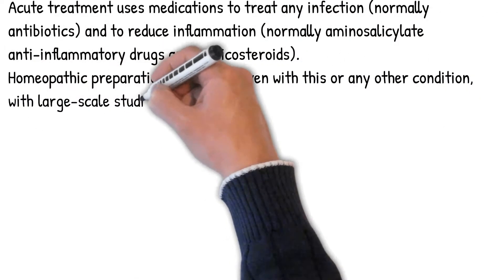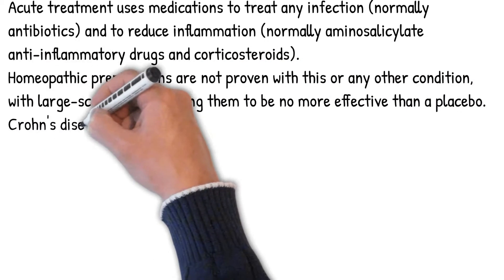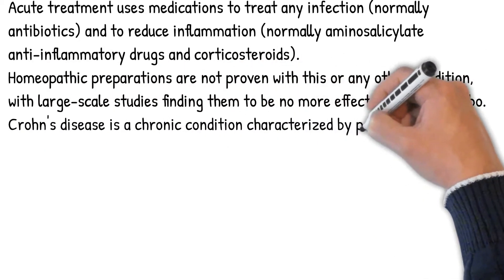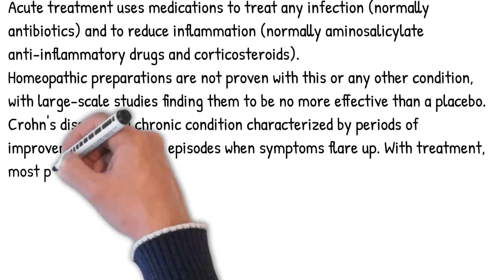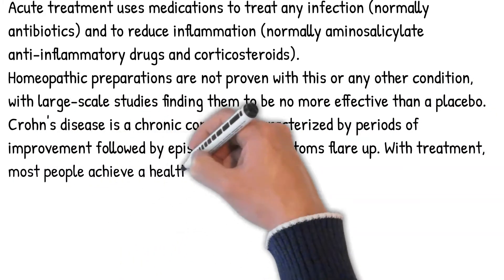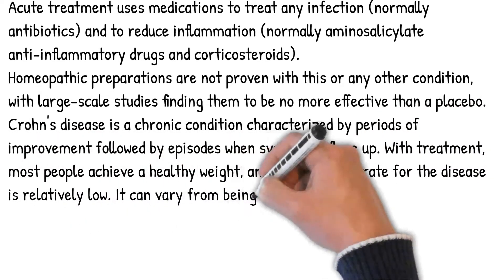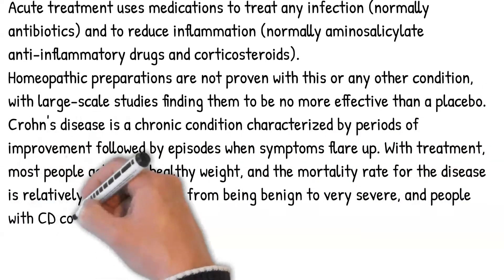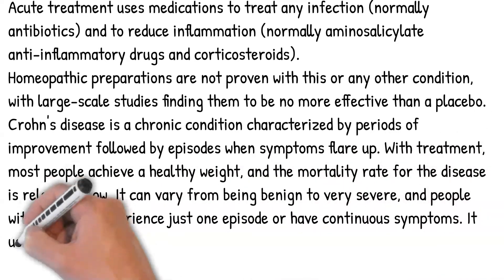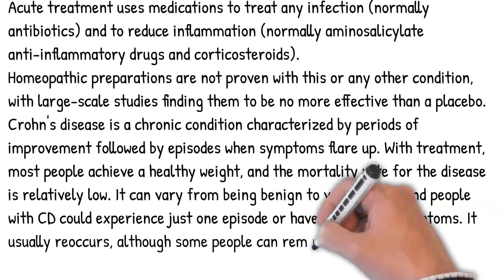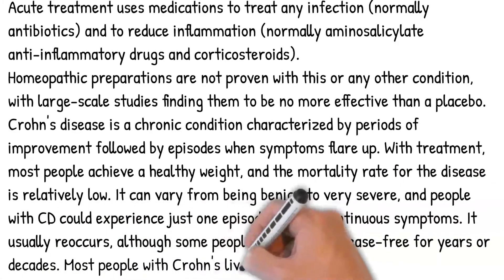Crohn's disease is a chronic condition characterized by periods of improvement followed by episodes when symptoms flare up. With treatment, most people achieve a healthy weight, and the mortality rate for the disease is relatively low. It can vary from being benign to very severe, and people with Crohn's disease could experience just one episode or have continuous symptoms. It usually reoccurs, although some people can remain disease-free for years or decades. Most people with Crohn's disease live a normal lifespan.